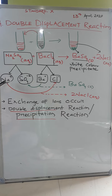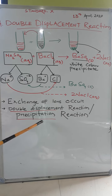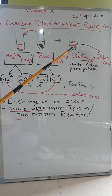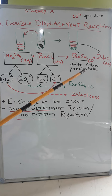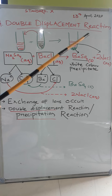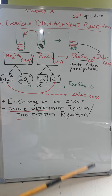This reaction is called double displacement because two displacements are occurring: one is Ba²⁺ and SO₄²⁻, and the other is Na⁺ and Cl⁻. It is also called a precipitation reaction because a white color precipitate is produced. The reaction in which precipitates occur can also be called a precipitate reaction. You can find more examples in your book or also on YouTube.